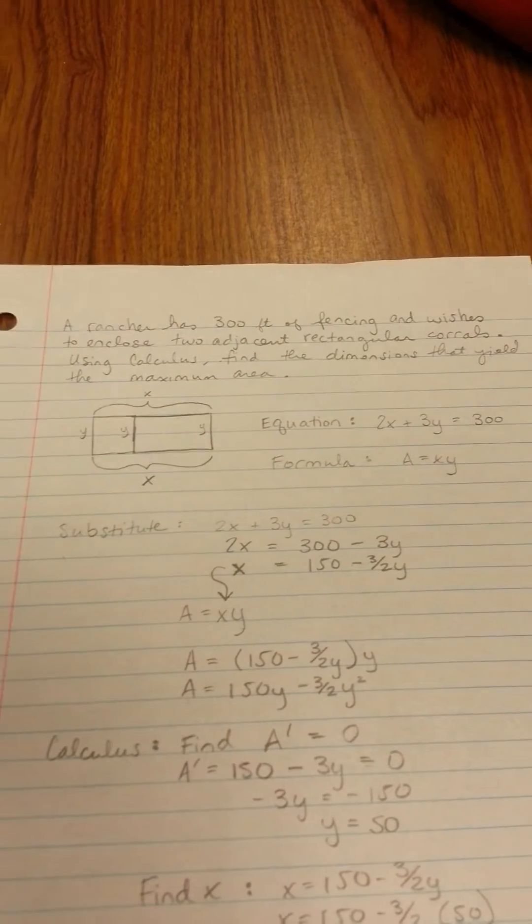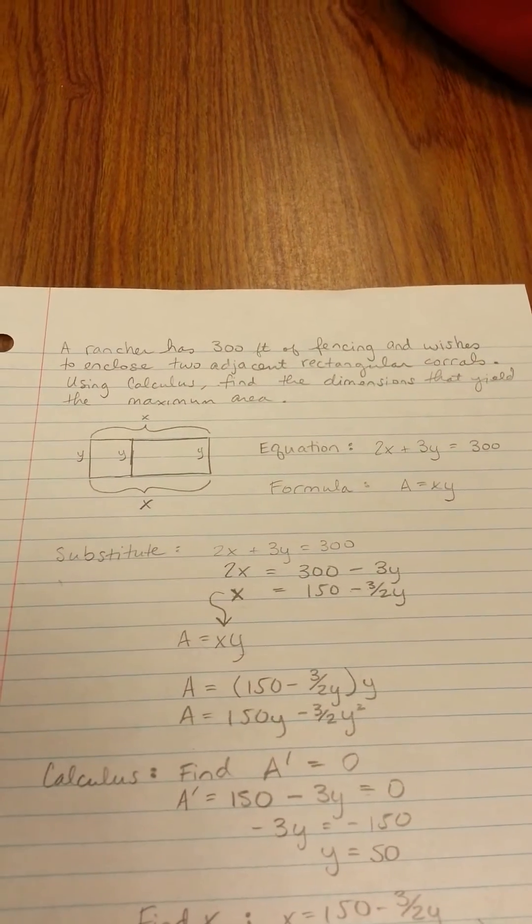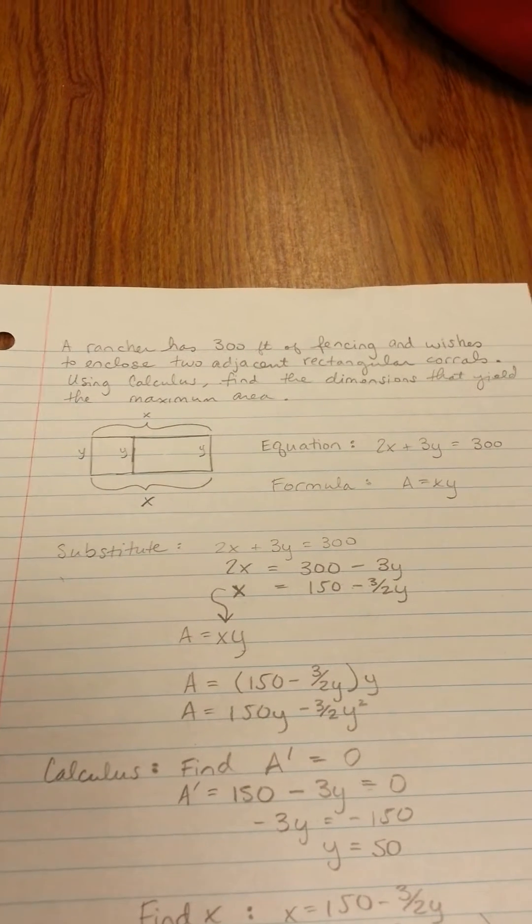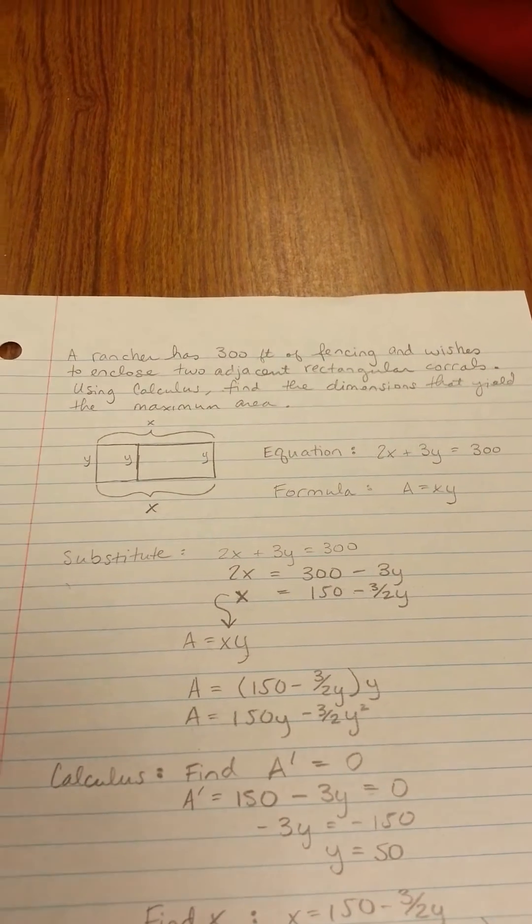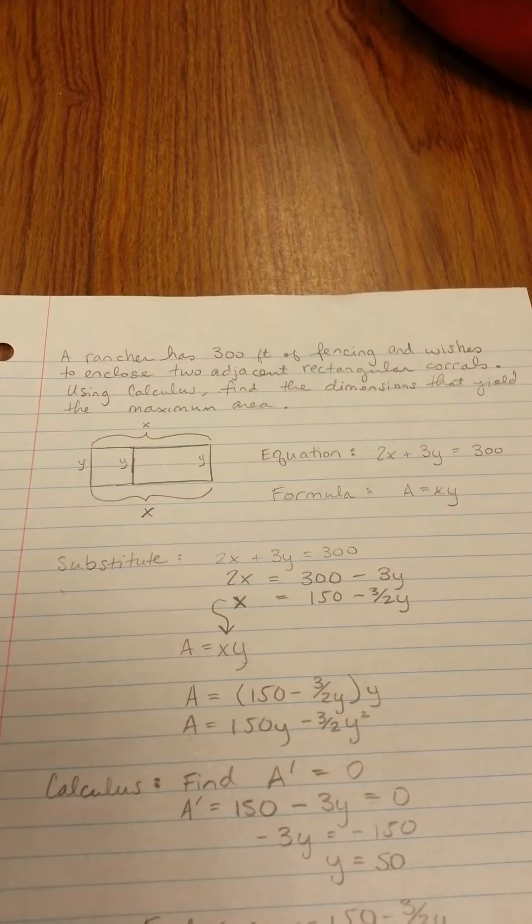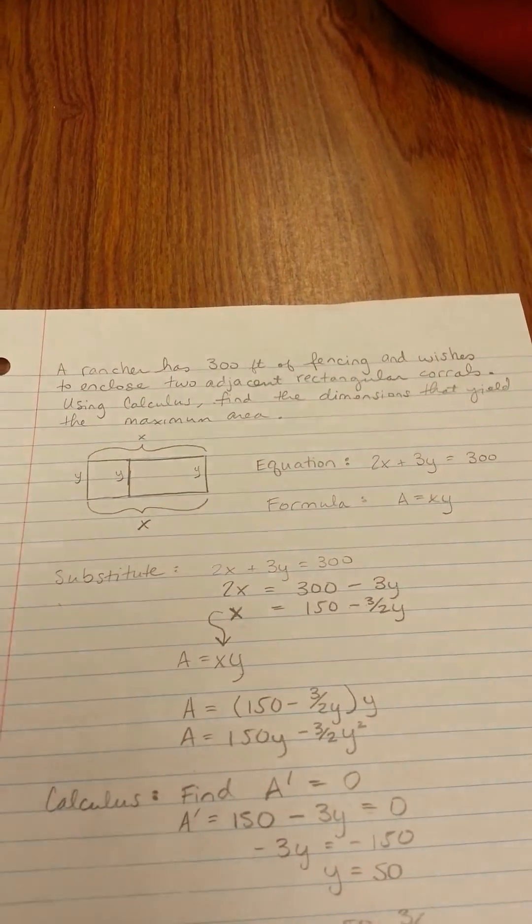The problem that we have is a rancher has 300 feet of fencing and wishes to enclose two adjacent rectangular corrals. Using calculus, find the dimensions that yield the maximum area.